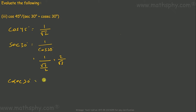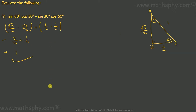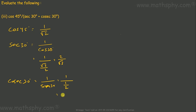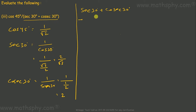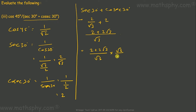Cosec 30 is 1 over sin 30. Sin 30 is 1 over 2, so cosec 30 equals 2. So sec 30 plus cosec 30 is 2 over root 3 plus 2. To rationalize: this becomes 2 plus 2 root 3, all over root 3. Multiplying numerator and denominator by root 3 gives 2 root 3 plus 6, all over 3.